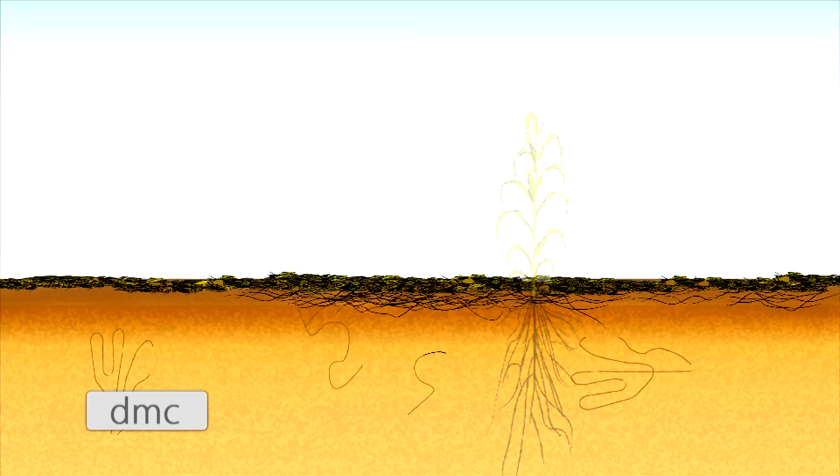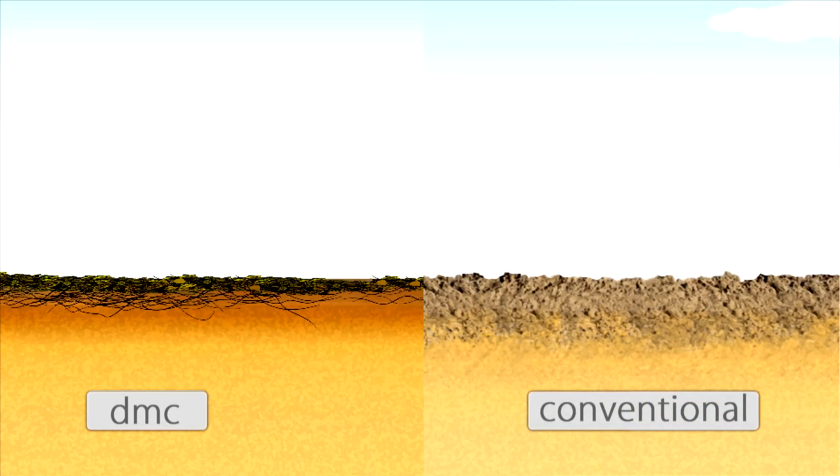However, in conventional systems, the soil is tilled. It is stripped bare before sowing.